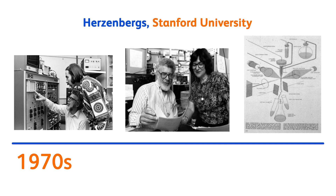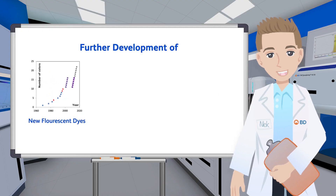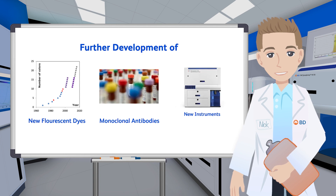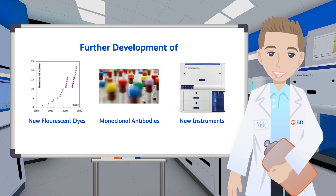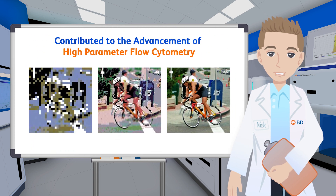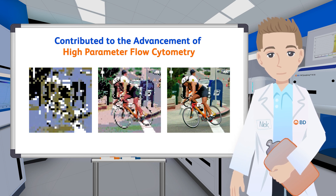As we know, the first commercial flow cytometry was created by the Heisenberg lab with the help of a BD engineering group in the early 1970s. The further development of new fluorescent dyes, monoclonal antibodies, and instruments has contributed to the advance of high-parameter flow cytometry, which many scientists leverage today.